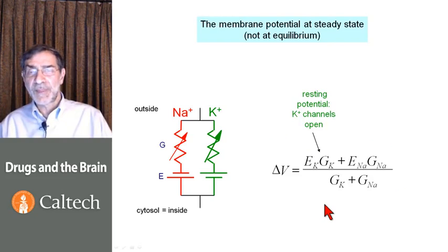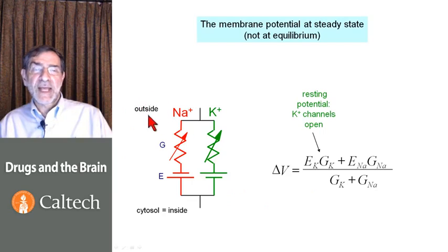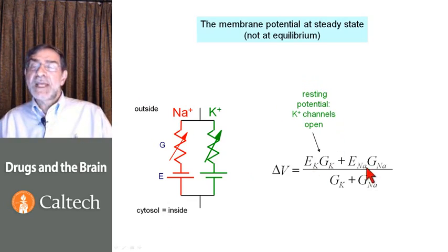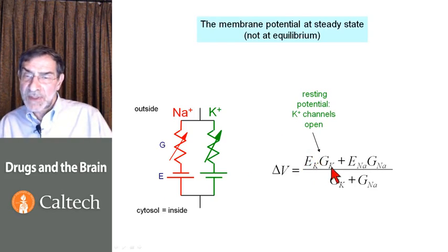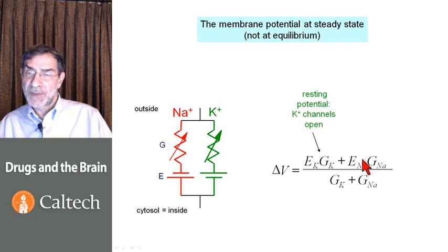Remember, it's not an equilibrium because the cell is pumping all of those ions back. Here's the outside of the cell and the inside of the cell. We see that the resting potential is a weighted sum of the Nernst potential for potassium times its conductance plus the Nernst potential for sodium times its conductance. At rest, mostly potassium channels are open, so the potassium terms dominate, and we have a resting potential which is very near EK, very near the resting potential for potassium.